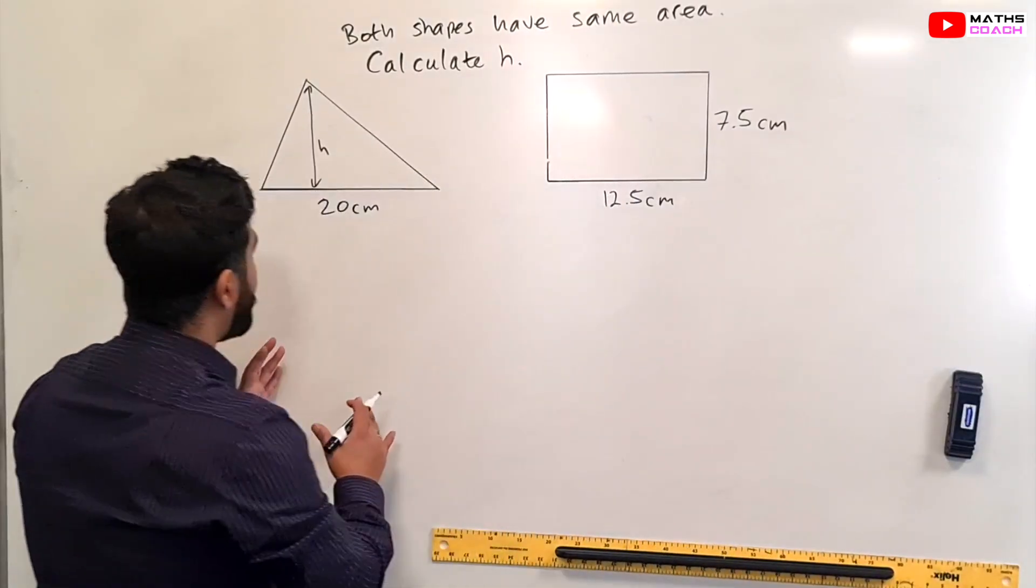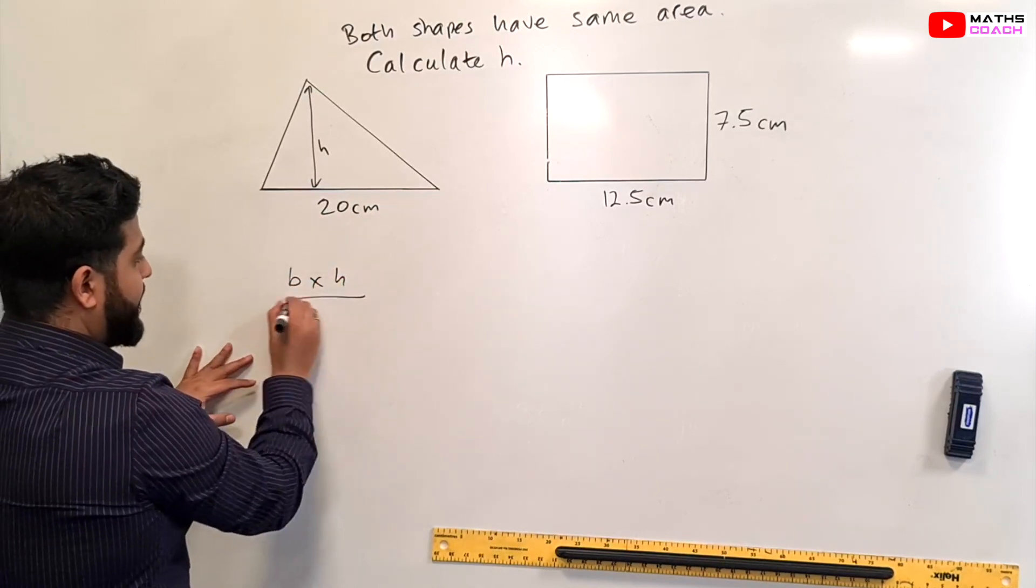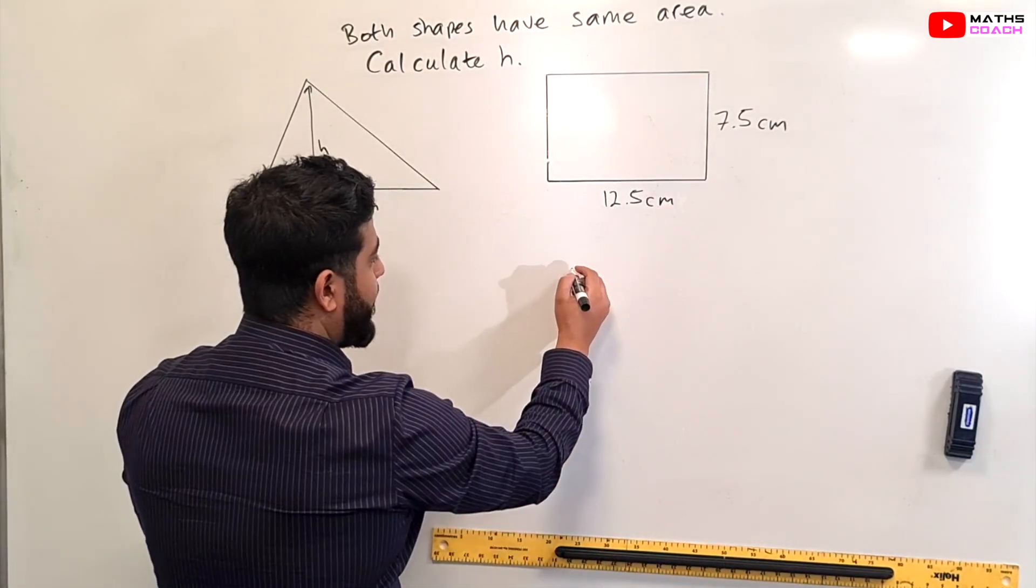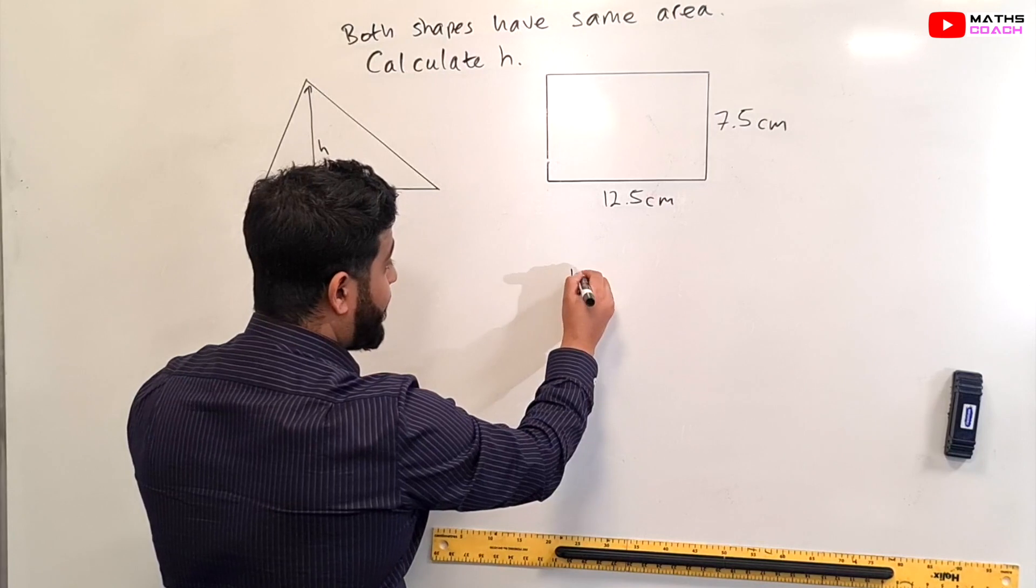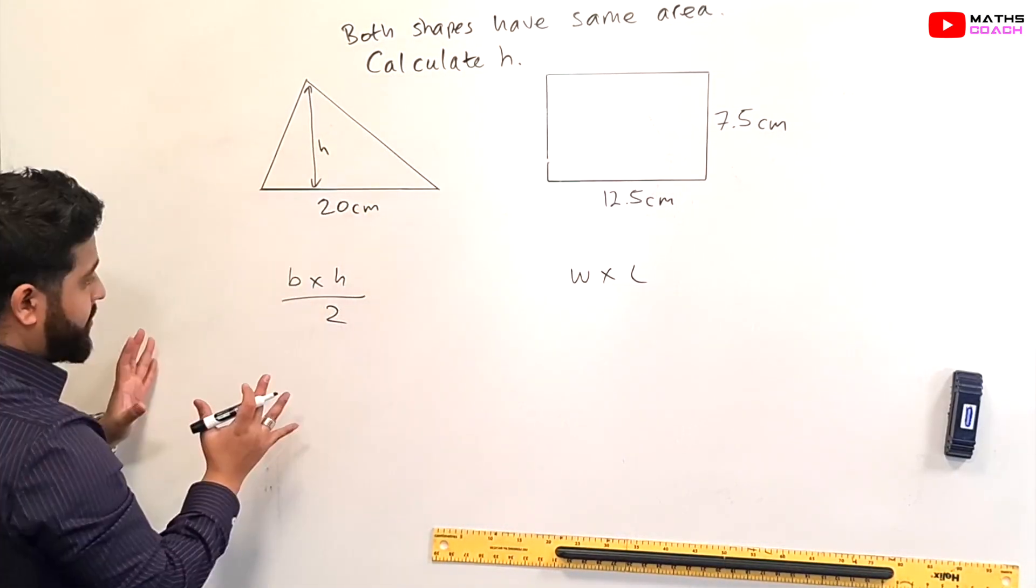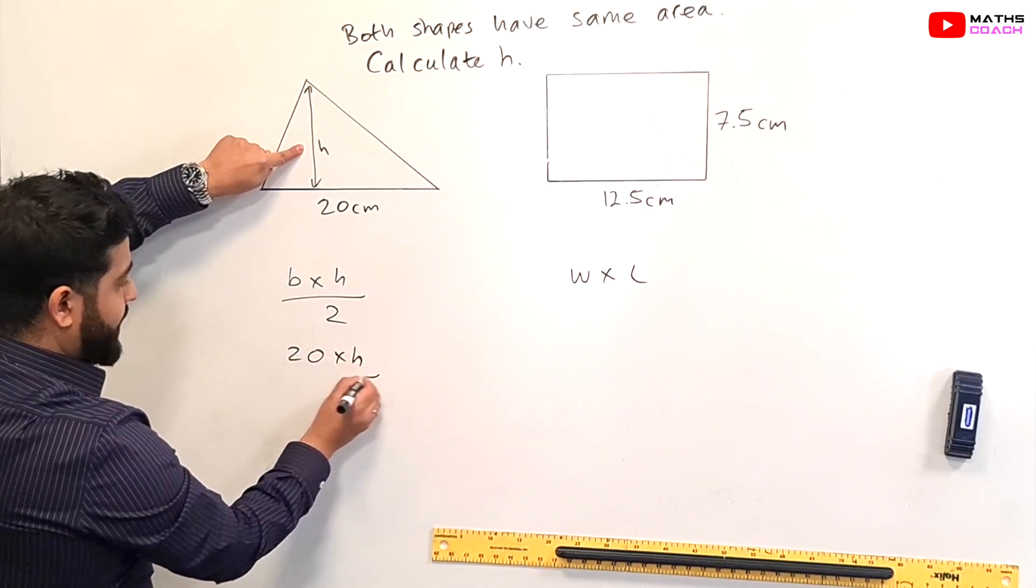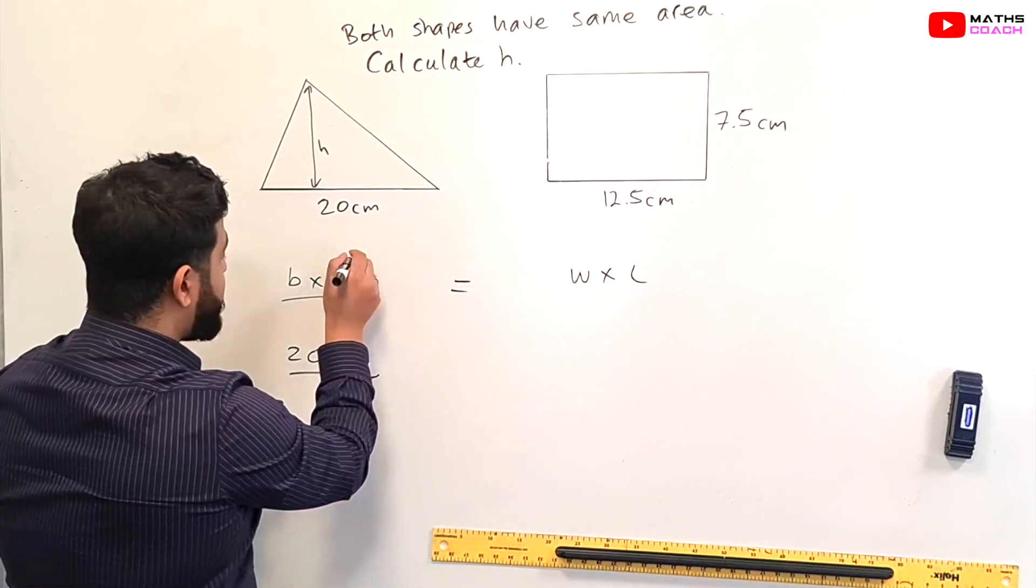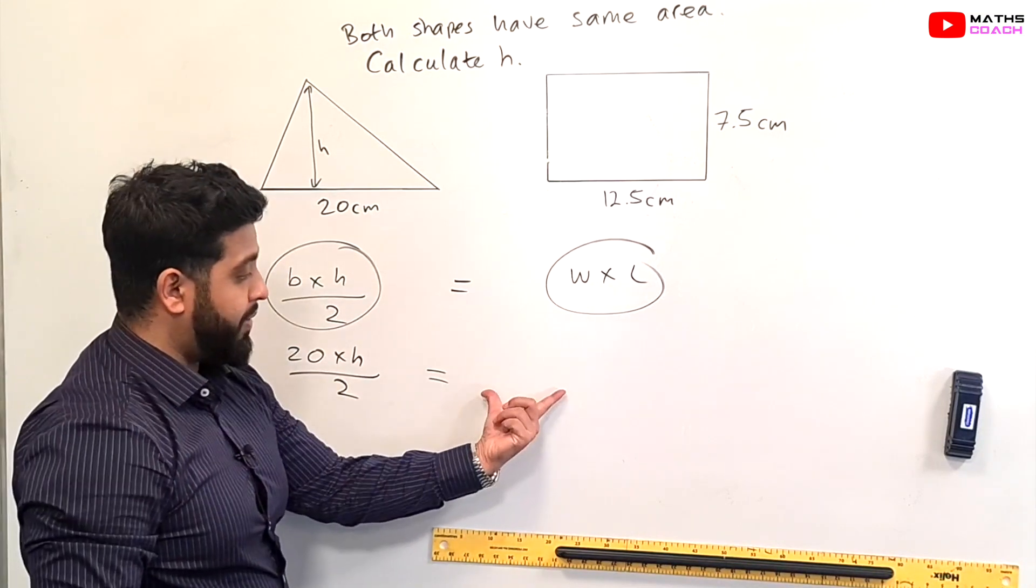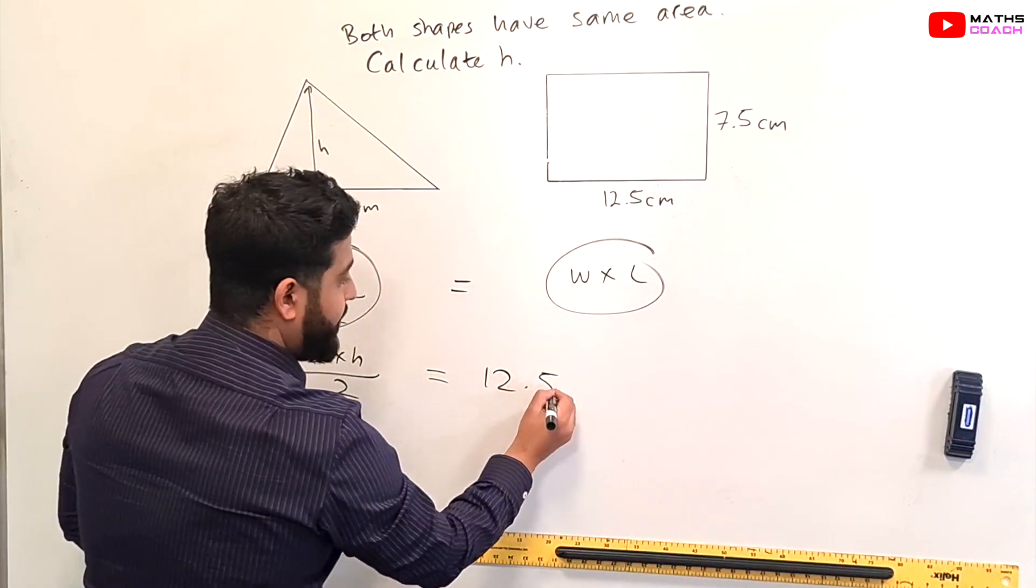So we know that the formula for calculating the area of a triangle is base times height divided by 2 and we know that the formula for calculating the area of a rectangle is base or width times length. So now let's apply this formula to this triangle here. So the base here is 20, 20 times by h divided by 2 and because these two are equal to each other we can write equal as well for what we're about to do over here. So 12.5 times by 7.5 will give us the area of that rectangle.